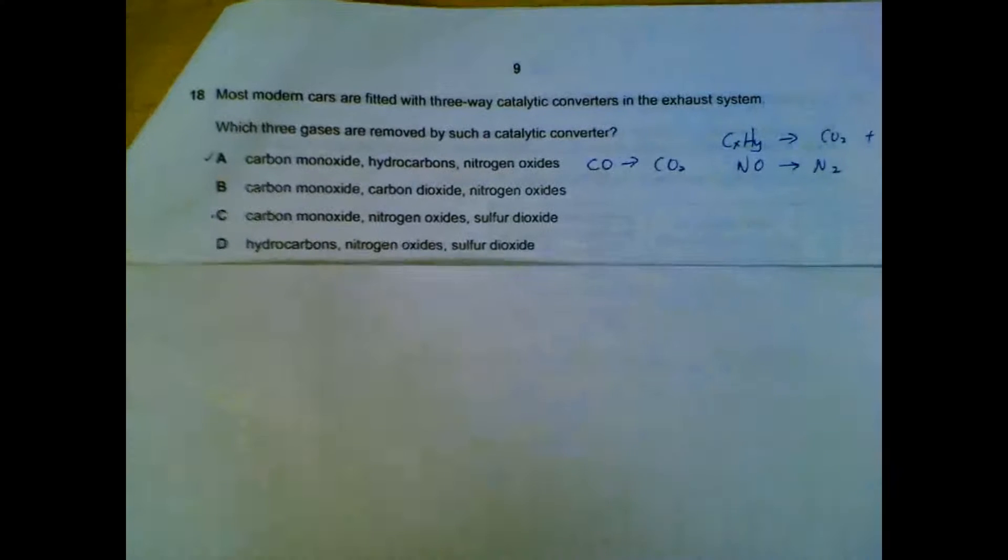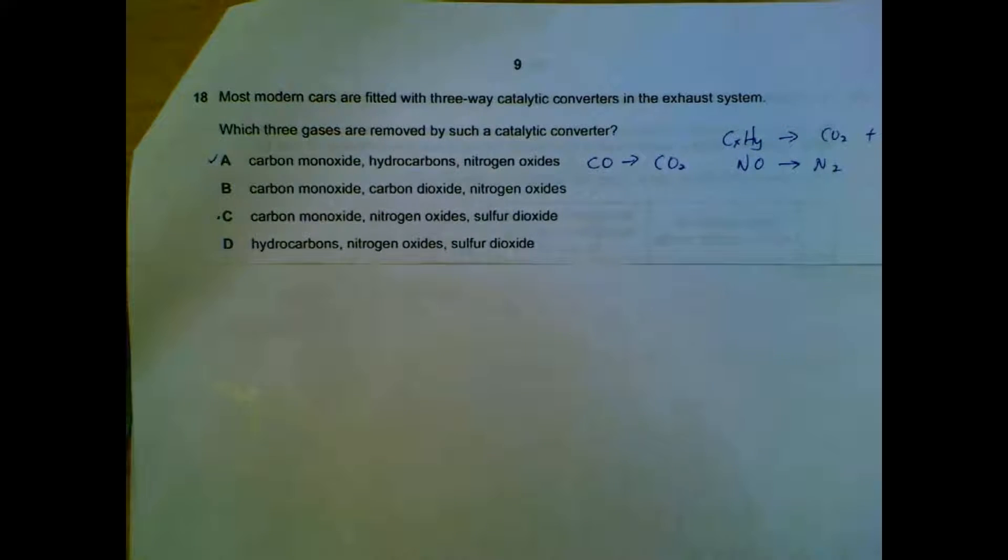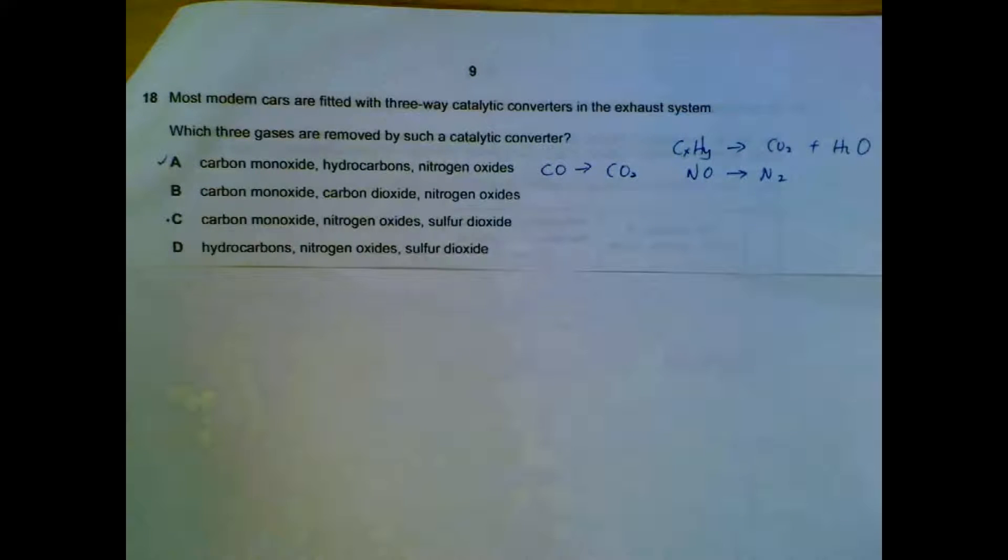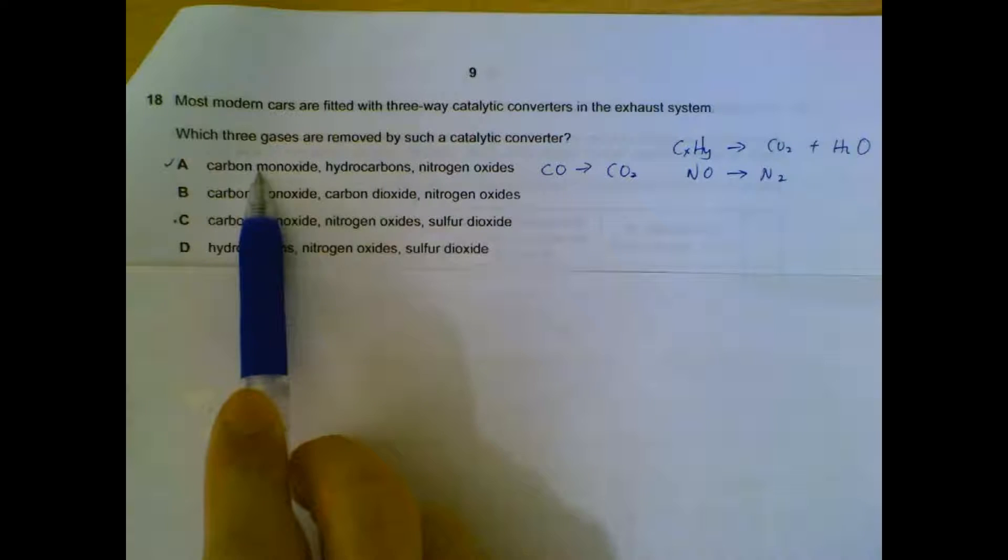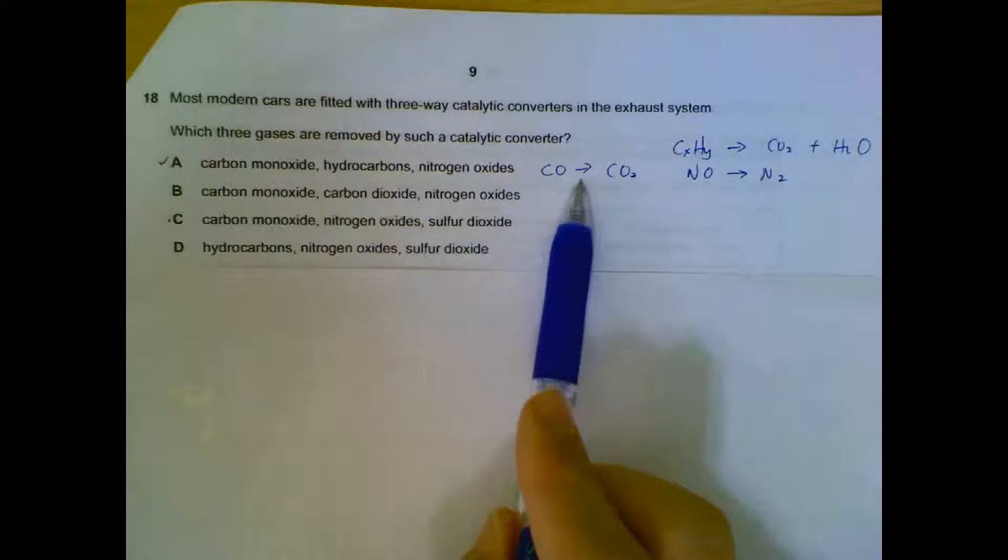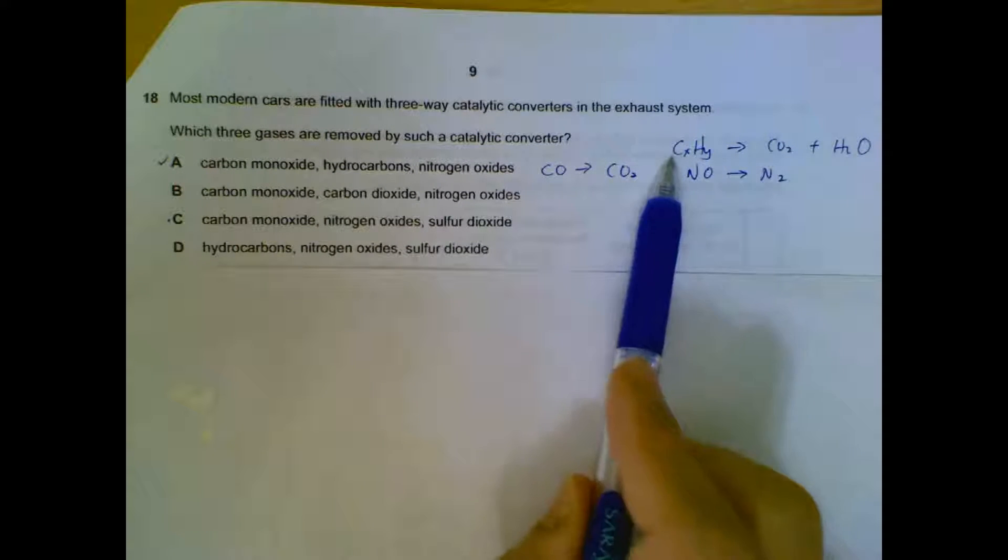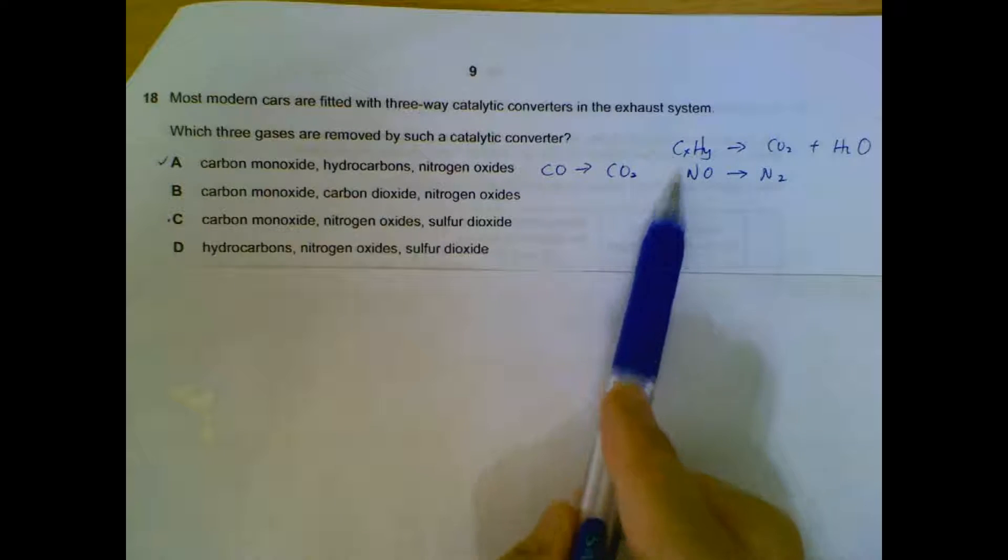Question 18, catalytic converters in car exhaust system. What gases are removed? Carbon monoxide will be changed to carbon dioxide. Hydrocarbons will be combusted to carbon dioxide and water. And nitrogen oxide will be converted to nitrogen gas. So A will be our selection.